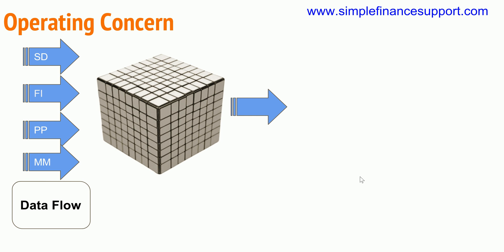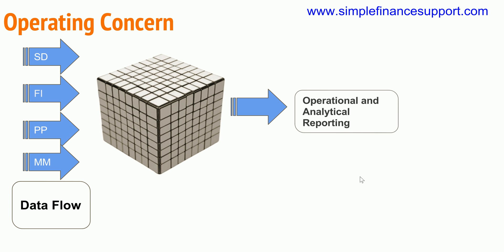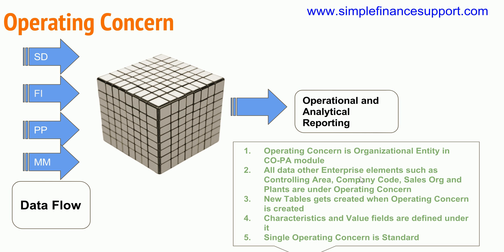The data flowing into the operating concern will be analyzed for operational and analytical reporting. Operational reporting is for day-to-day monitoring of data flowing into COPA. For analytical reporting, management needs strategic decision-making — analyzing which products are being sold in which market segments and which customers need a concentration of market development.